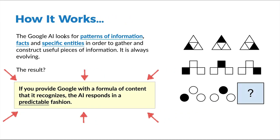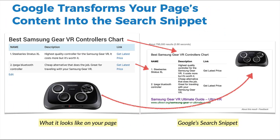How does the search snippet work? The search snippet uses artificial intelligence, and it looks for patterns of information, facts, and special entities to gather information about what the answer is. Google's artificial intelligence is looking for answers to the questions that people are asking. So if you can provide Google with a formula of content that it recognizes, you can feed the AI what it's looking for, it's going to accept your answer and show it. The Google AI is not super smart yet, and that's why we can predictably feed it information it will respond to favorably.